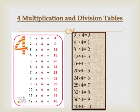Division Table of 4: 8 divided by 4 equals 2, 12 divided by 4 equals 3, 16 divided by 4 equals 4, 20 divided by 4 equals 5, 24 divided by 4 equals 6, 28 divided by 4 equals 7, 32 divided by 4 equals 8, 36 divided by 4 equals 9, 40 divided by 4 equals 10. These 3 and 4 multiplication and division tables will help you solve your questions.